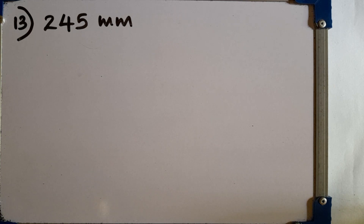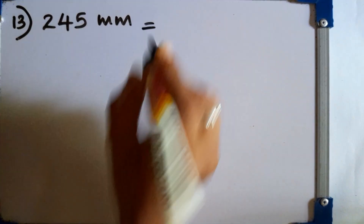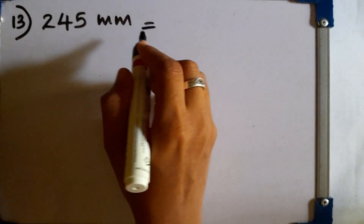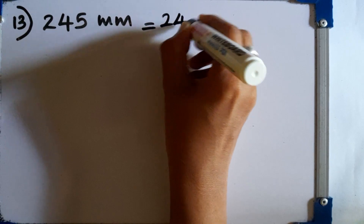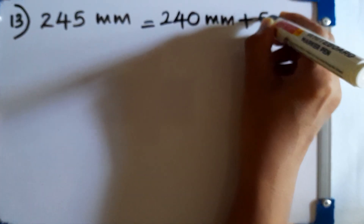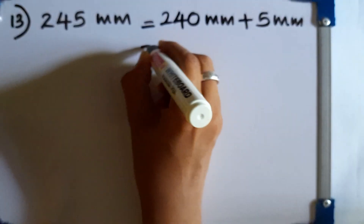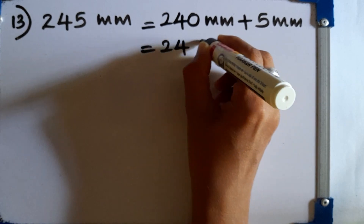Question number 13: express 245 millimeters in centimeters and millimeters. We know that 1 centimeter equals 10 millimeters. We can separate it as 240 millimeters plus 5 millimeters. 240 millimeters equals 24 centimeters. So the answer is 24 centimeters and 5 millimeters.